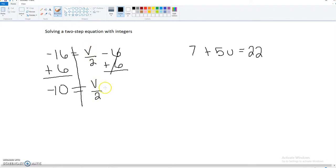So now we're going to multiply by 2. And again, that's on both sides. So now we've got negative 20 equals v for this particular problem.